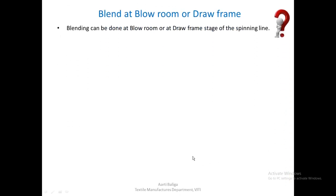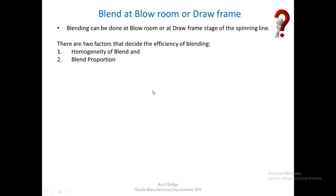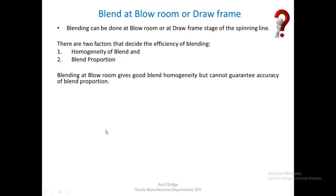Once we decide to blend two materials, we should find out where exactly it would be beneficial to blend. There are two stages at which blending can happen: blowroom and drawframe. Two factors decide this: the homogeneity of the blend and the blend proportion. Blending at blowroom gives good blend homogeneity because many machines follow afterward, but it cannot guarantee the accuracy of the blend proportion. For a 67:33 or 50:50 proportion, more fibers of one component may be lost during processing.